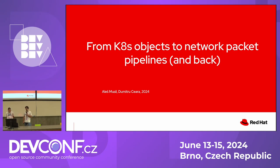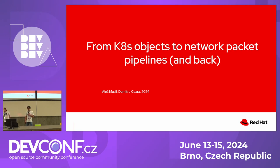Hi, everyone. Thanks for coming. My name is Dmitry Csara. I'm here together with my colleague Aleš. We're part of the core OVN team, Open Virtual Network team in Red Hat. Today's talk is not about AI. It's about OpenShift virtual networking, and we're going to try to have a sort of journey throughout the stack from Kubernetes objects all the way to the network packet pipeline and then hopefully manage to come back.